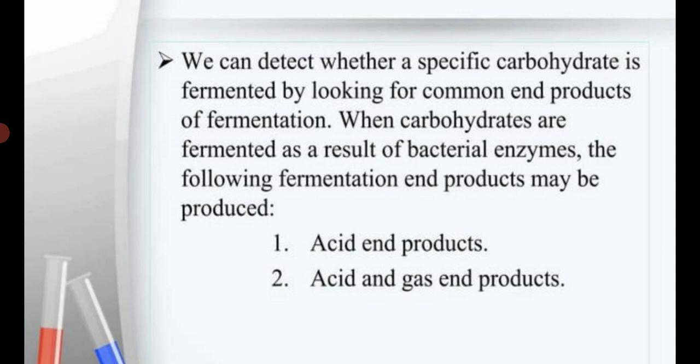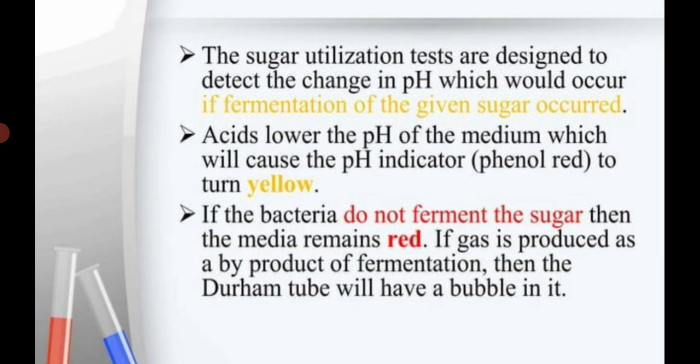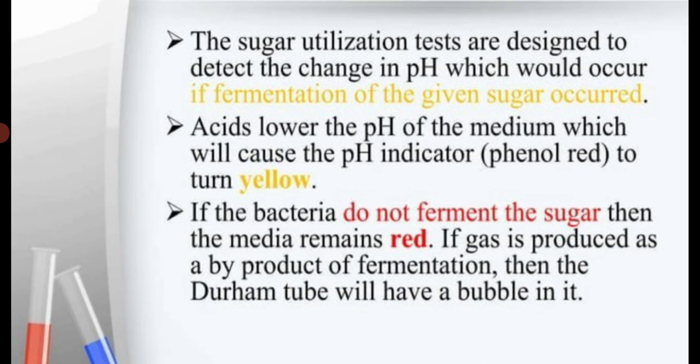We can detect whether a specific carbohydrate is fermented by looking for common end products. When carbohydrates are fermented by bacterial enzymes, the following end products may be produced: first, acid and gas. The sugar fermentation tests are designed to detect a change in pH which would occur if fermentation of a given sugar occurs. The formed acid lowers the pH of the medium, causing the pH indicator to change color. For example, phenol red changes to yellow, whereas the Andrade indicator changes to pink.